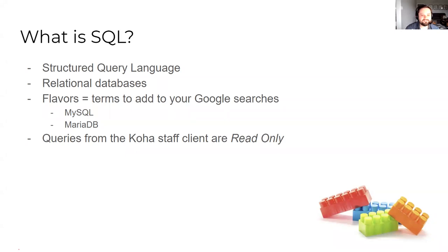We wanted to talk a little bit about the different flavors of SQL. There are many out there. Koha typically uses MySQL. We've been moving towards using MariaDB — I think Bywater's been moving a lot of customers to that, which is just a fork of MySQL. I wanted to mention that in the basics, because those are good terms to use when you're Googling. The different flavors of SQL can sometimes have different syntax, different keywords. So if you're trying to do something and needed to Google it, you can add MySQL to your search to get more direct results.